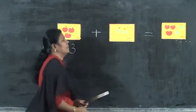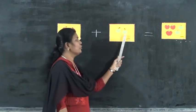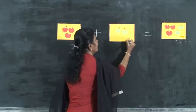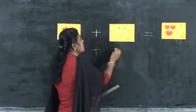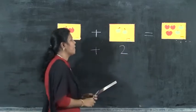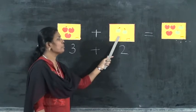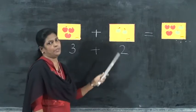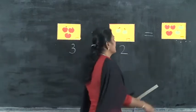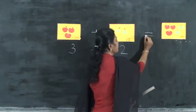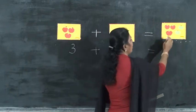Plus. How many apples here? One, two. You can write here: two. Three red apples and two green apples. All together, how many apples is that equal to? Count all together.